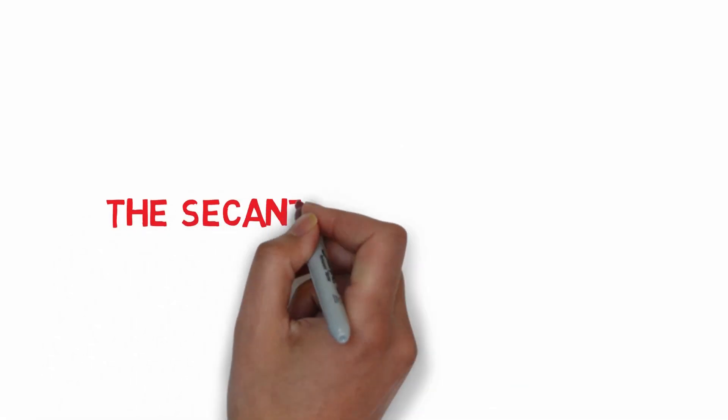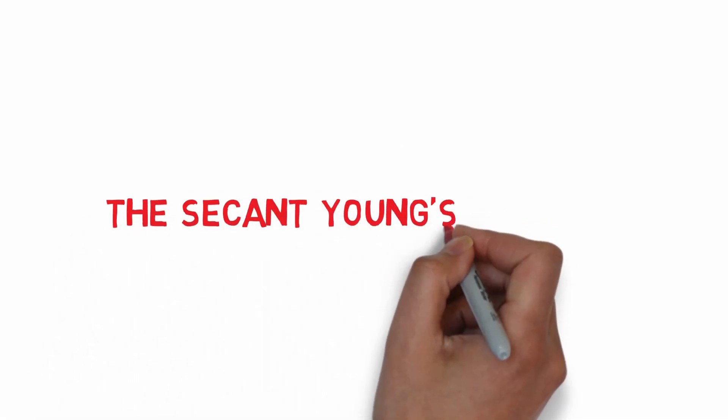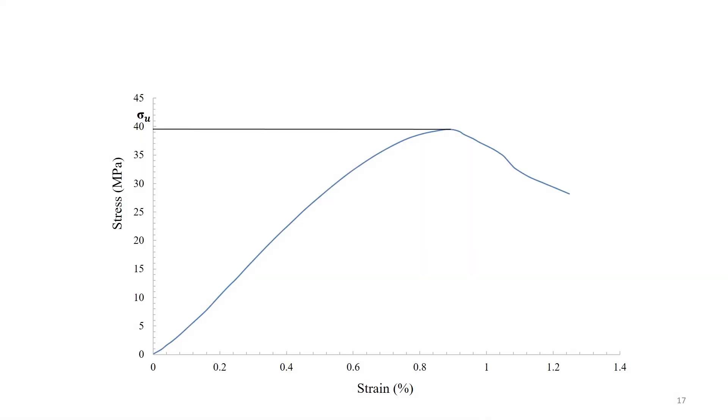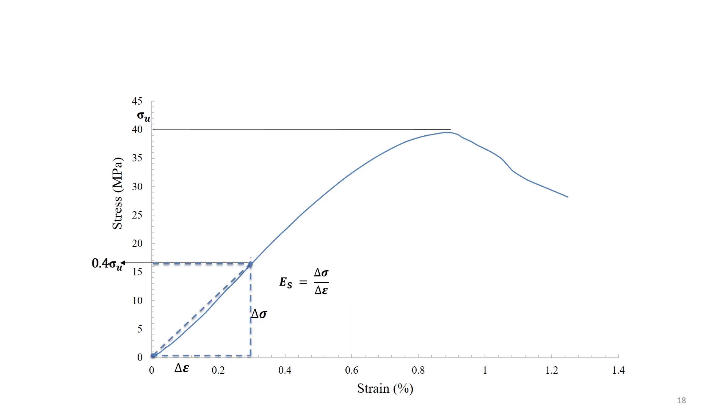The second method is the secant Young's modulus. The secant Young's modulus is the slope of a straight line joining zero to a point on the curve at some fixed percentage of the maximum strength. For example, let's compute the test value of the secant modulus of elasticity at 40% of the maximum strength for wood.